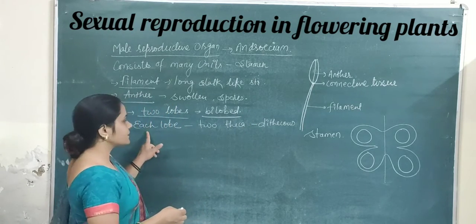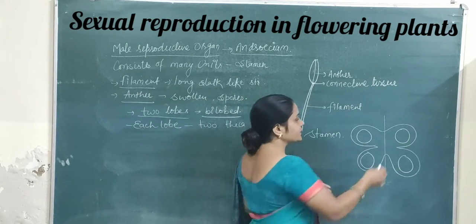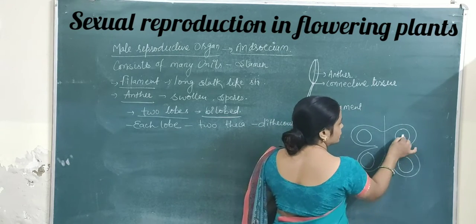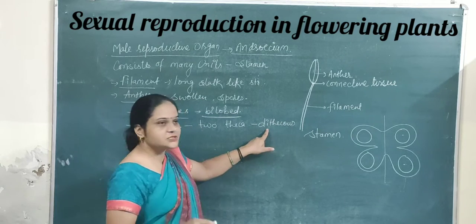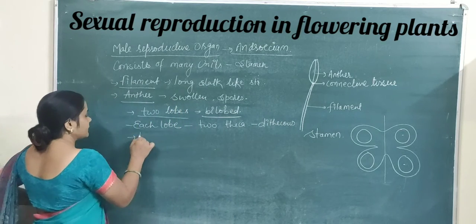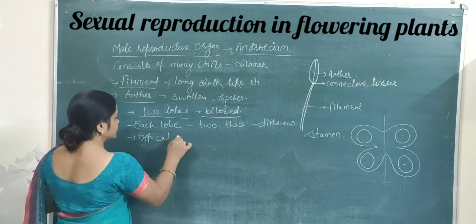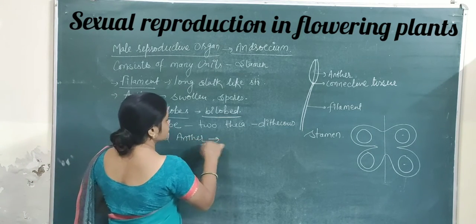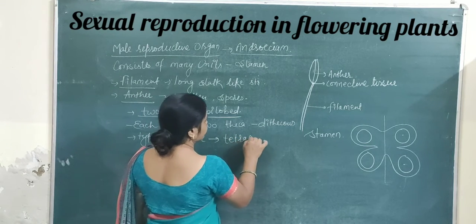The two-lobe condition is called the bilobed condition. In one lobe, two thecae are present, so this condition is known as the dithecous condition. If we consider the typical anther, it consists of a tetrasporangiate condition.